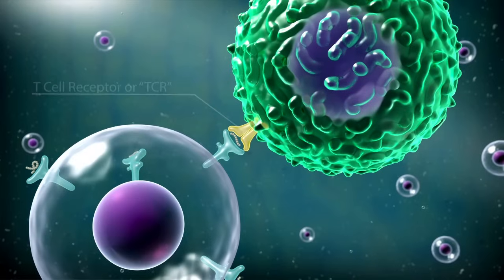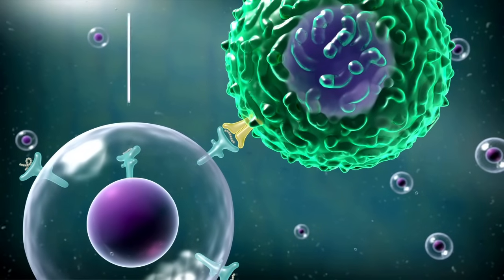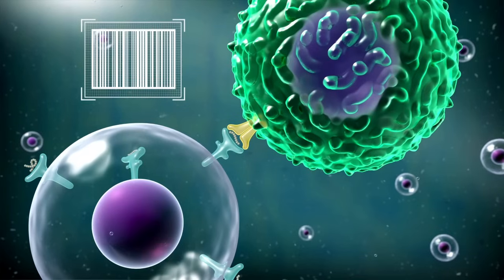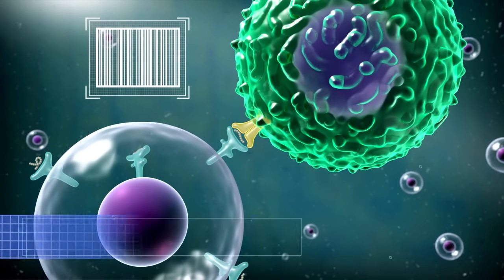The TCR works as a barcode scanning machine and the peptides presented on the cells are unique barcodes. This function of the T cells is called surveillance.